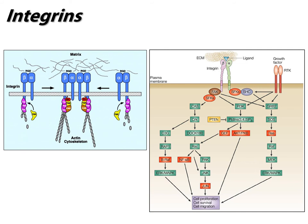Here we have an integrin binding to some compound in the extracellular matrix, cross-reacting with a receptor tyrosine kinase, activating proteins, and generating phosphorylated intermediates that can lead to a whole range of different types of responses. We're never just getting one signal - we're always getting a plethora of signals all the time. How do we coordinate them all? That's through what we call crosstalk between these receptors.